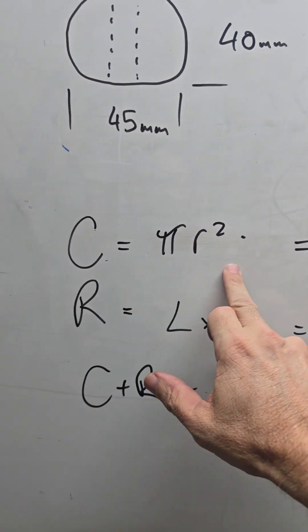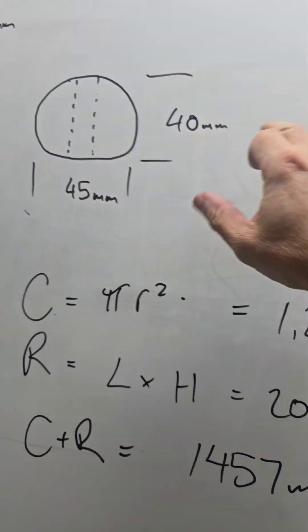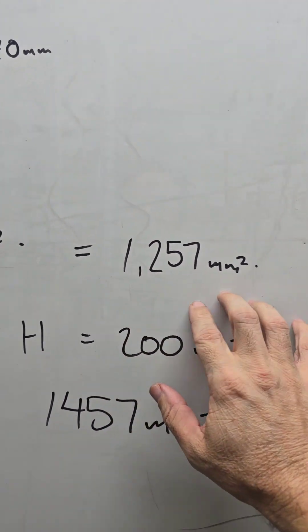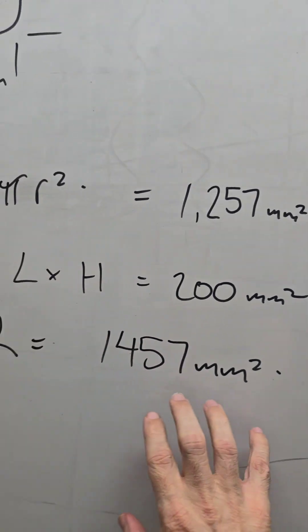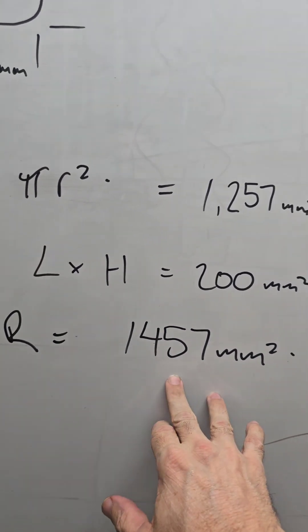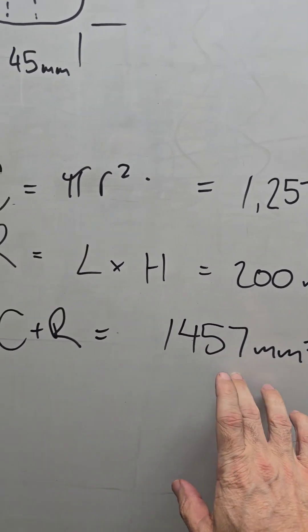That's 200 square millimeters. Pi R squared of the 40 gives us the 1,257mm squared. Gives us a total of 1,457 at the window.